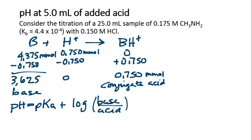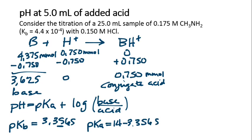We have Kb. So to get pKb, we have negative base 10 log of 4.4 times 10 to the minus 4. pKb equals 3.3565. And then to find pKa, it's 14 minus that. So 14 minus 3.3565 is 10.64.